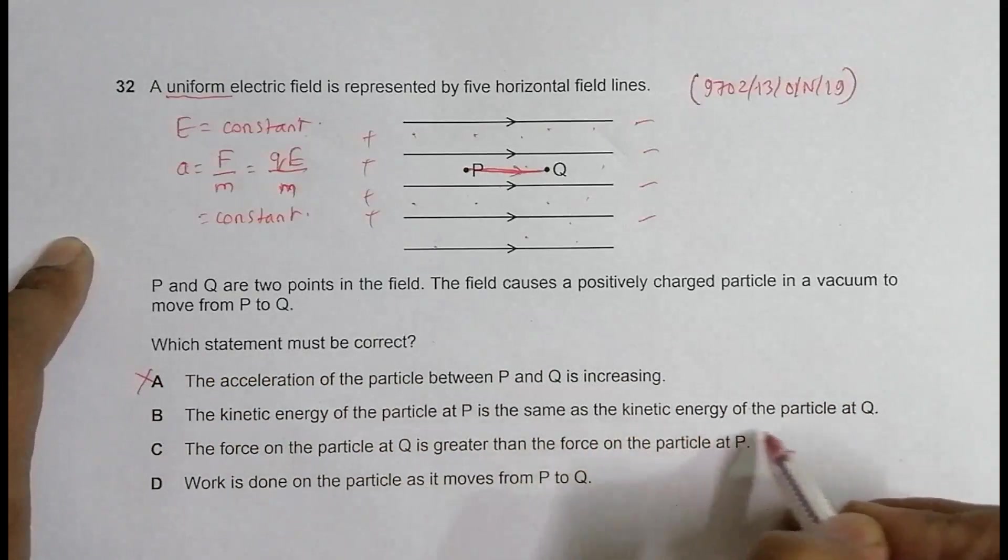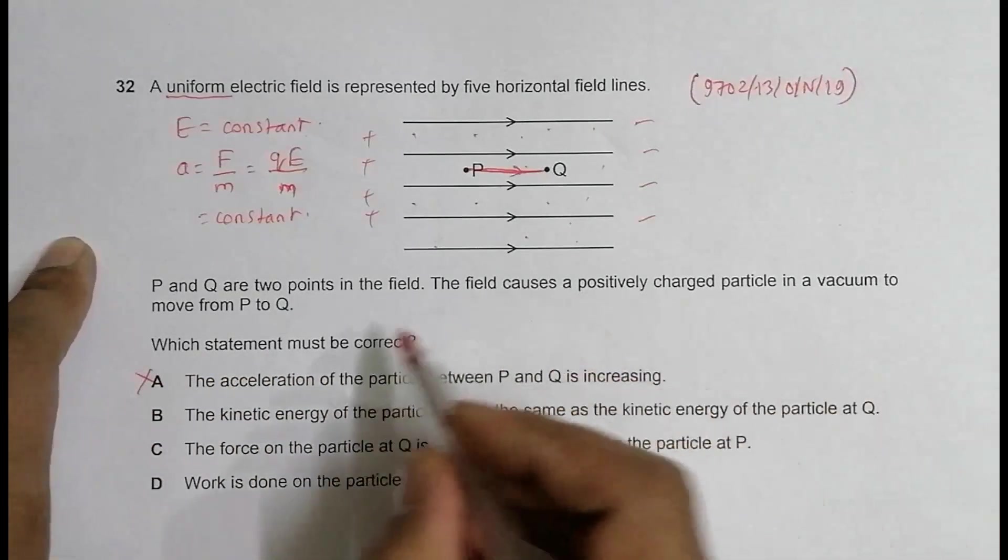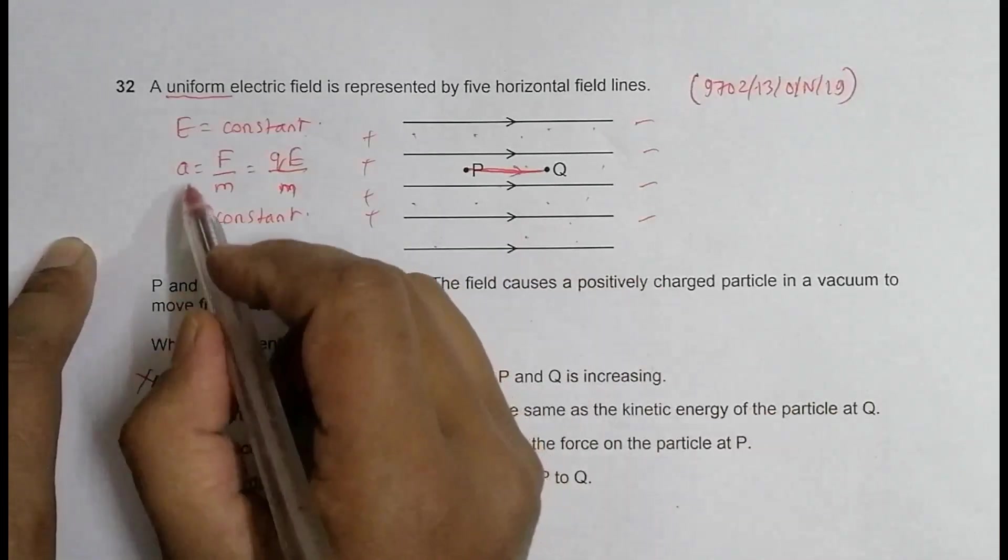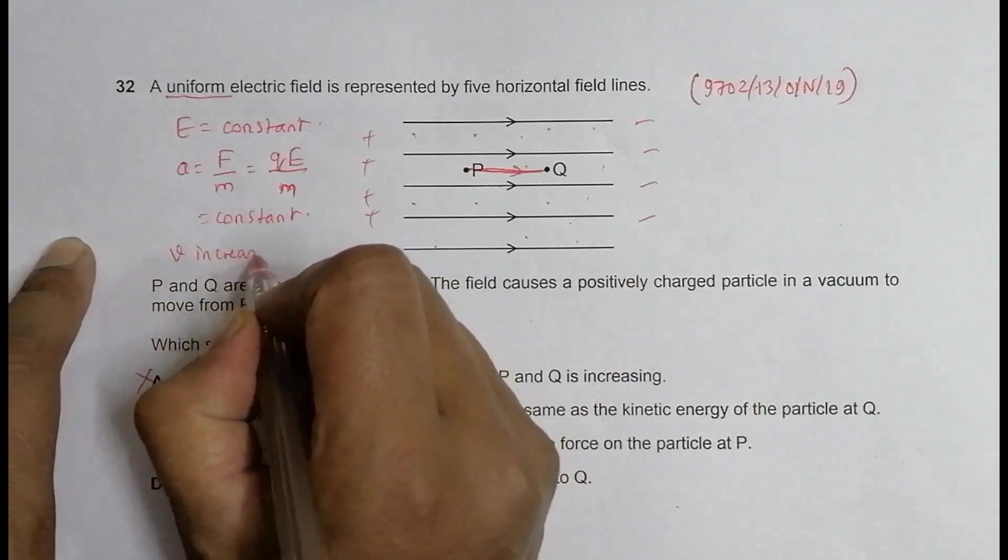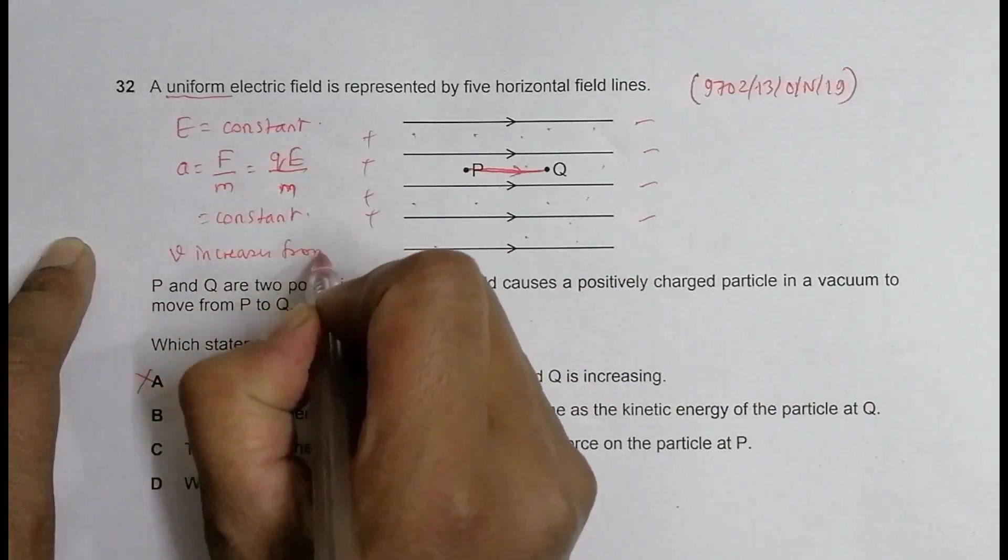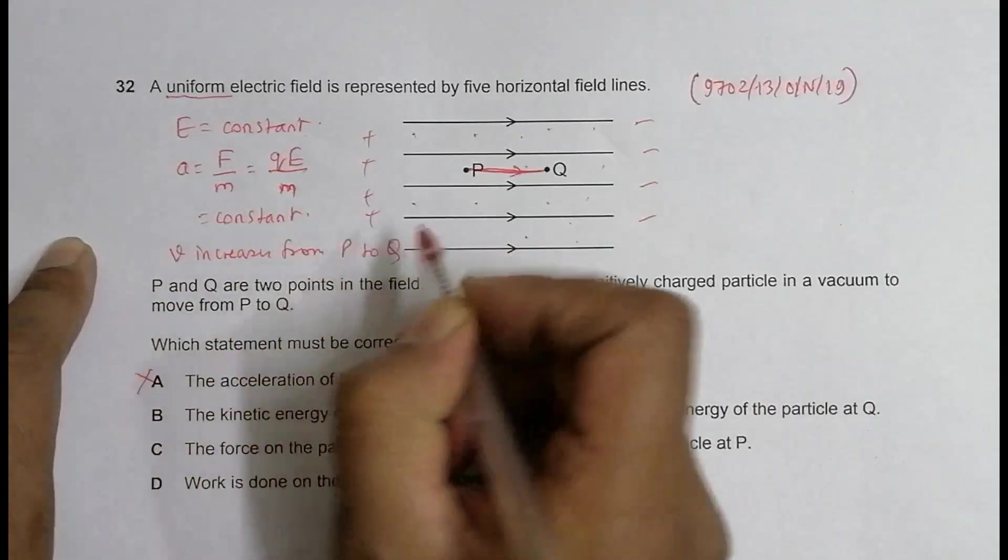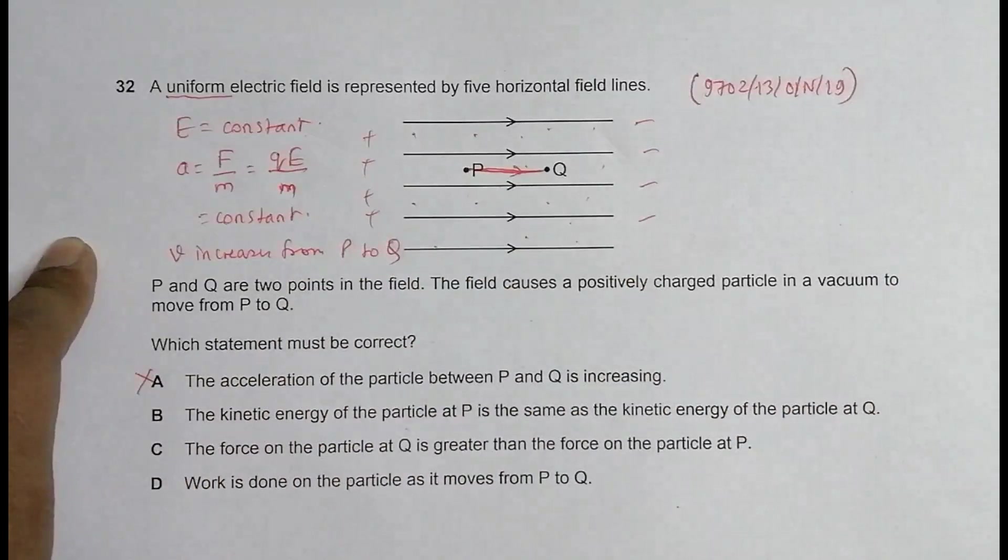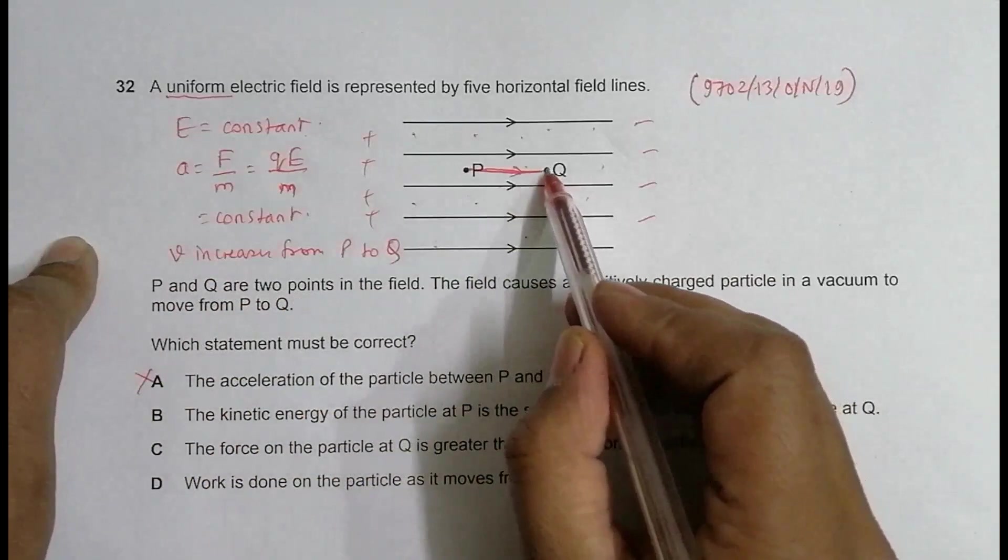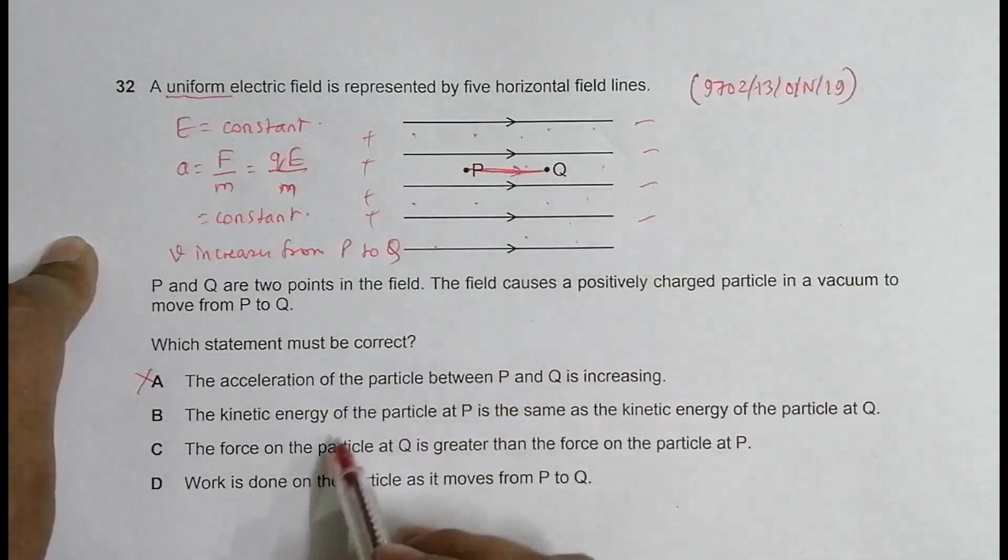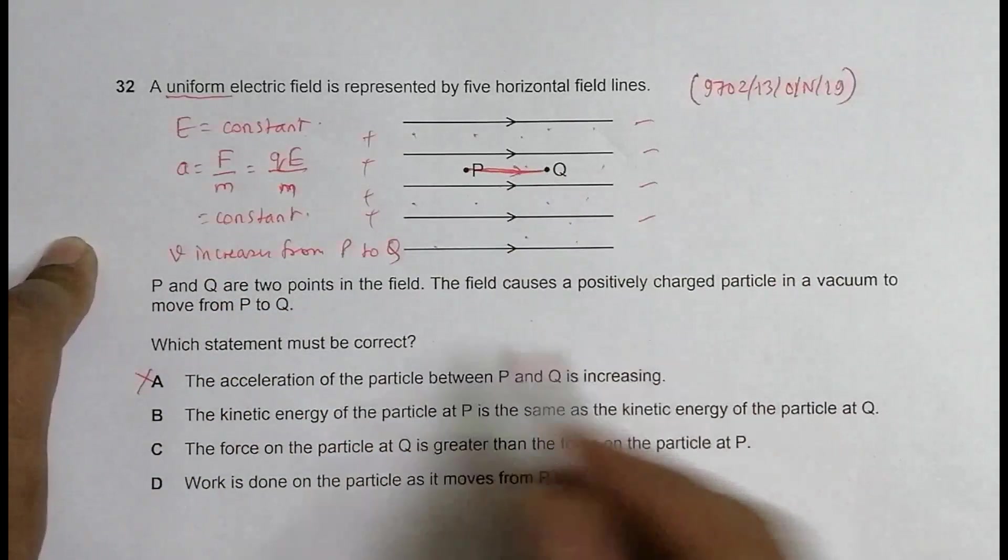In the next question, the KE of the particle at P is the same as KE of the particle at Q. In this case, since a is constant, V increases from P to Q. So that means the kinetic energy also should increase because KE is equal to half m v squared. So if V increases, the KE should increase. KE here should be more and KE here should be less. So this is also incorrect.